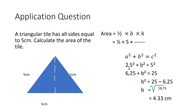Substituting: 2.5 squared is 6.25. Bringing down B squared, and 5 squared is 25. I have a linear equation with one unknown. Keep the unknown on the left-hand side; 25 stays on the right-hand side. The plus 6.25 goes across the equals sign and becomes minus 6.25, leaving 18.75. Solving for B, the square becomes a square root: B equals the square root of 18.75, which is 4.33 centimeters. So the perpendicular height is 4.33 centimeters, and I can now substitute this into the area formula to solve for area.